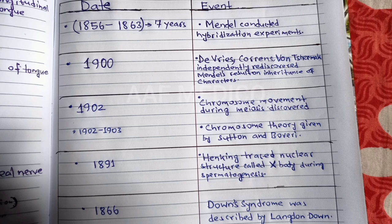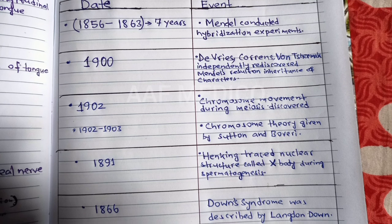The first date was 1856 to 1863 — seven years. In these years, Father of Genetics Gregor Johan Mendel conducted hybridization experiments. Mendel was from Czech Republic. He conducted experiments in Garden Pea.